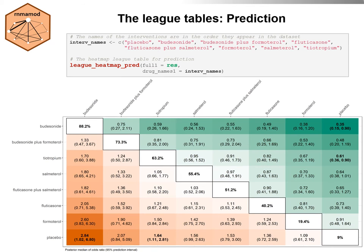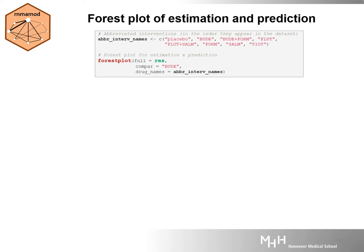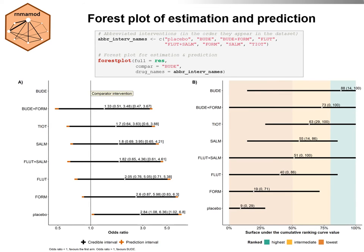The league heatmap prediction function has the same arguments as the league heatmap function, but it displays the predictions for all possible pairwise comparisons in the network. A compact alternative to the league table is to create a forest plot of comparisons with a selected comparator intervention. We have selected Budesonide as the reference and run the following code to obtain forest plots where estimation and prediction results co-appear.